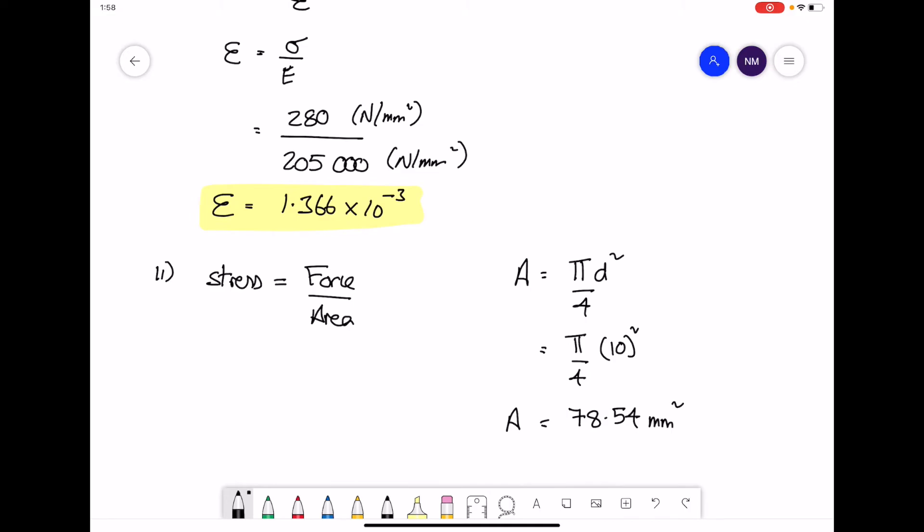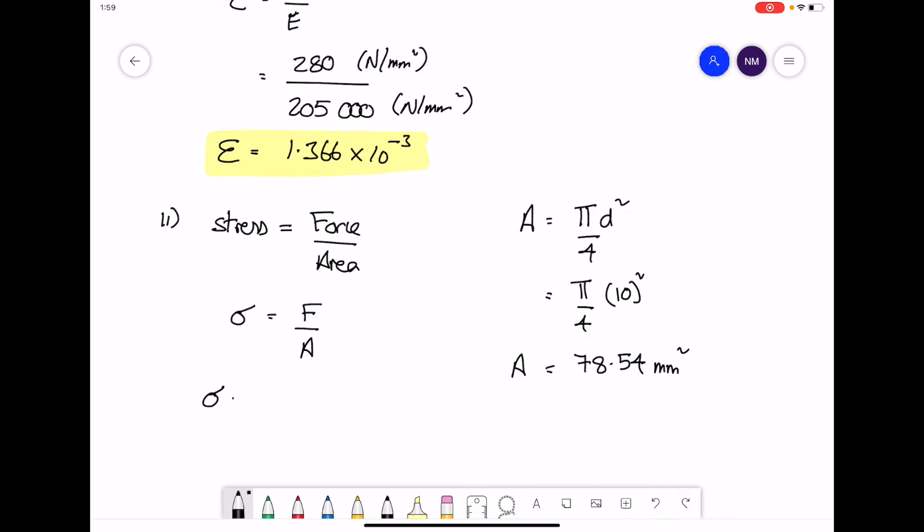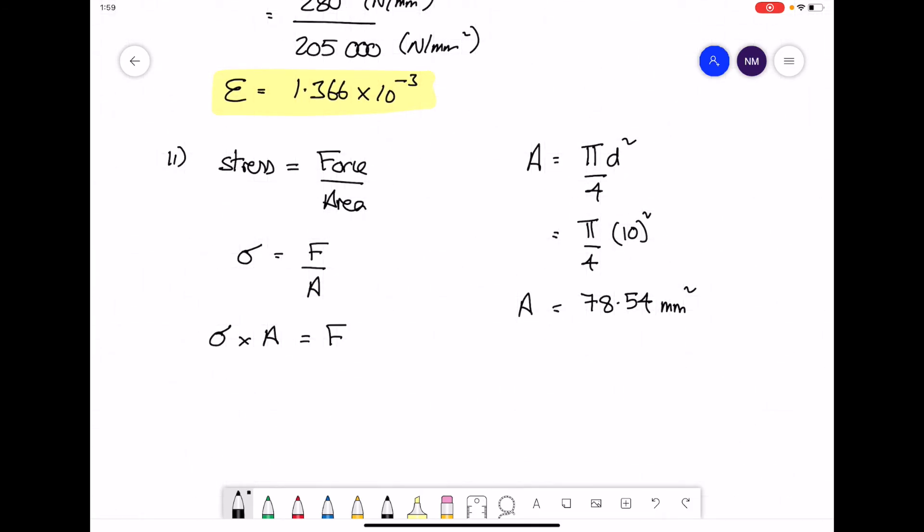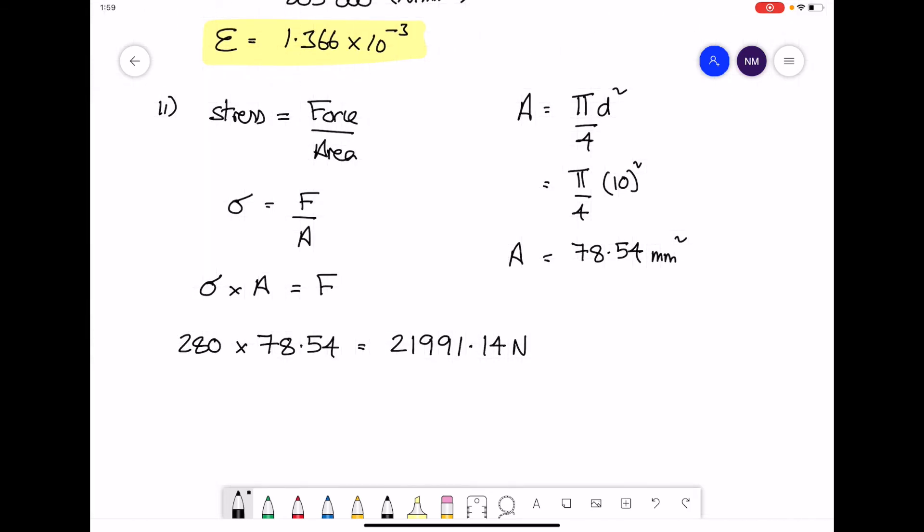This value can then be used in the stress equation to calculate the force. So our stress is the force divided by the area. Or cross multiplying up by the area, the stress multiplied by the area gives you the force. Stress we know to be a value of 280. Area 78.54. That gives us a value of 21,991.14 newtons. Our force is then either 21,991 newtons, or you can express that as 21.99 kilonewtons.